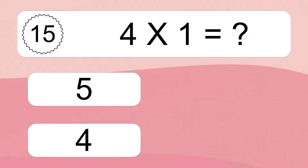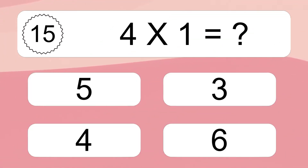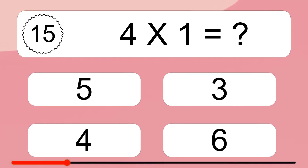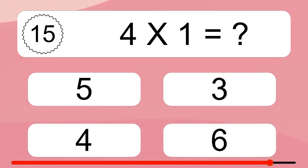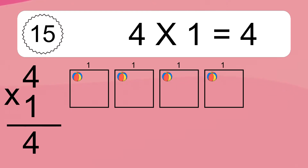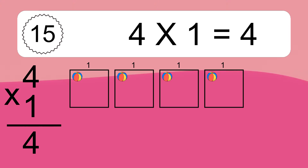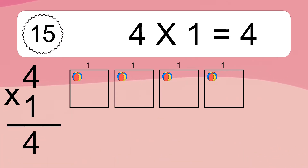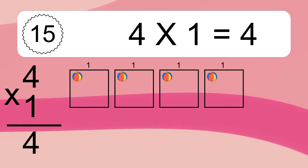4 times 8 equals what? 4 times 1 equals 4. We have 4 boxes, and each box has 1 colorful ball inside. If you count all the balls in all the boxes together, you will have 4 times 1 balls. This equals 4 balls.